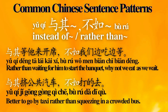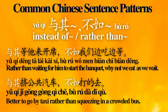Number 6: 与其...不如 — 'Instead of' or 'rather than.' Sentence examples: 与其等她来开席，不如我们边吃边等。 Rather than waiting for her to start the banquet, why not we eat as we wait? 与其挤公共汽车，不如打的去。 Better to go by taxi rather than squeezing in a crowded bus.